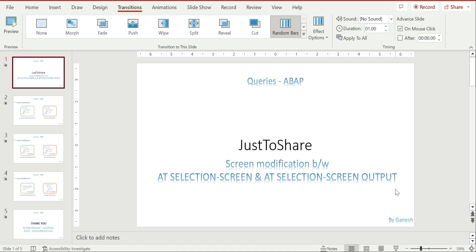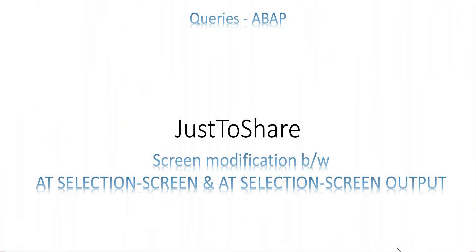If you write screen modification code in PAI, it goes to PBO but doesn't have control over screen components or modifications — it just keeps all the components in the same state. That is the reason. Let me get to the slide with the code so it's easier to understand.